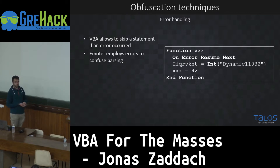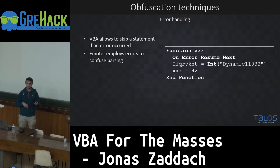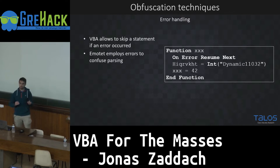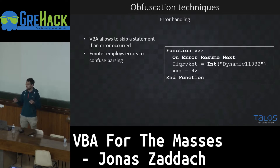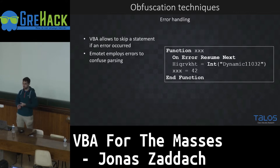Another technique seen in new Emotet documents from September uses VBA's special error handling. When you have a function you can say 'On Error Resume Next,' which means if a statement fails, execute the next statement. You can imagine it like having a try-catch around every instruction. So if you cast something to an int that is clearly not an int, it results in an error and the instruction is skipped — just like it wasn't there — also confusing analysis tools.